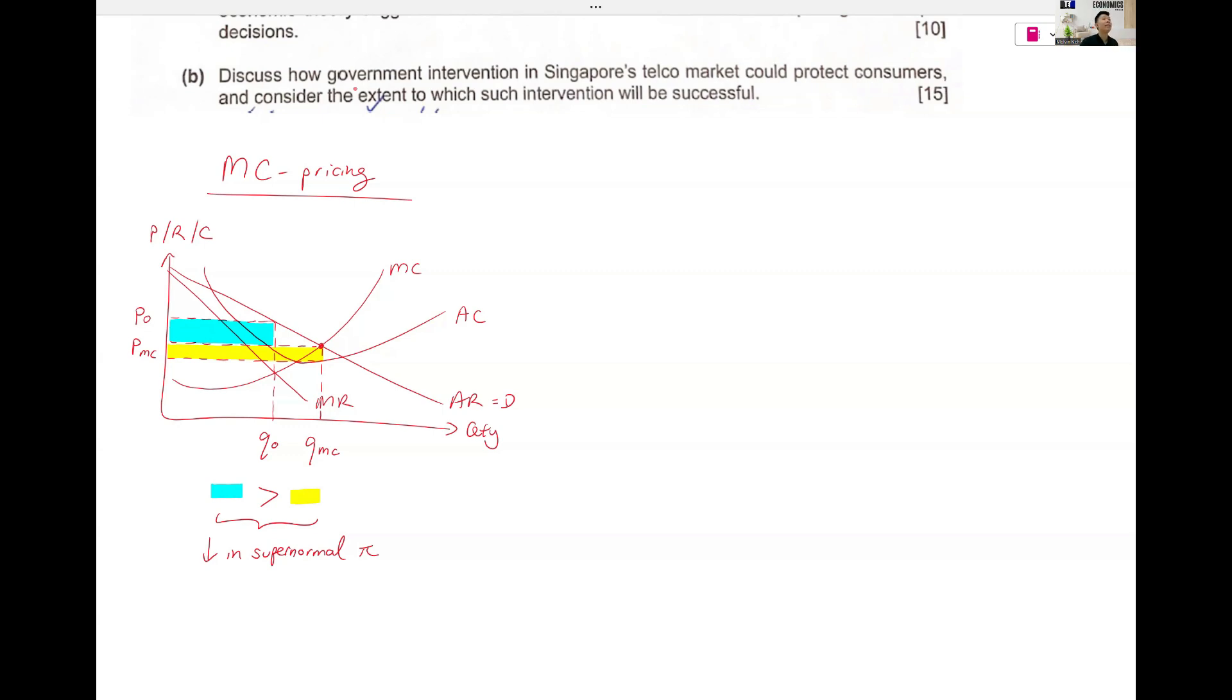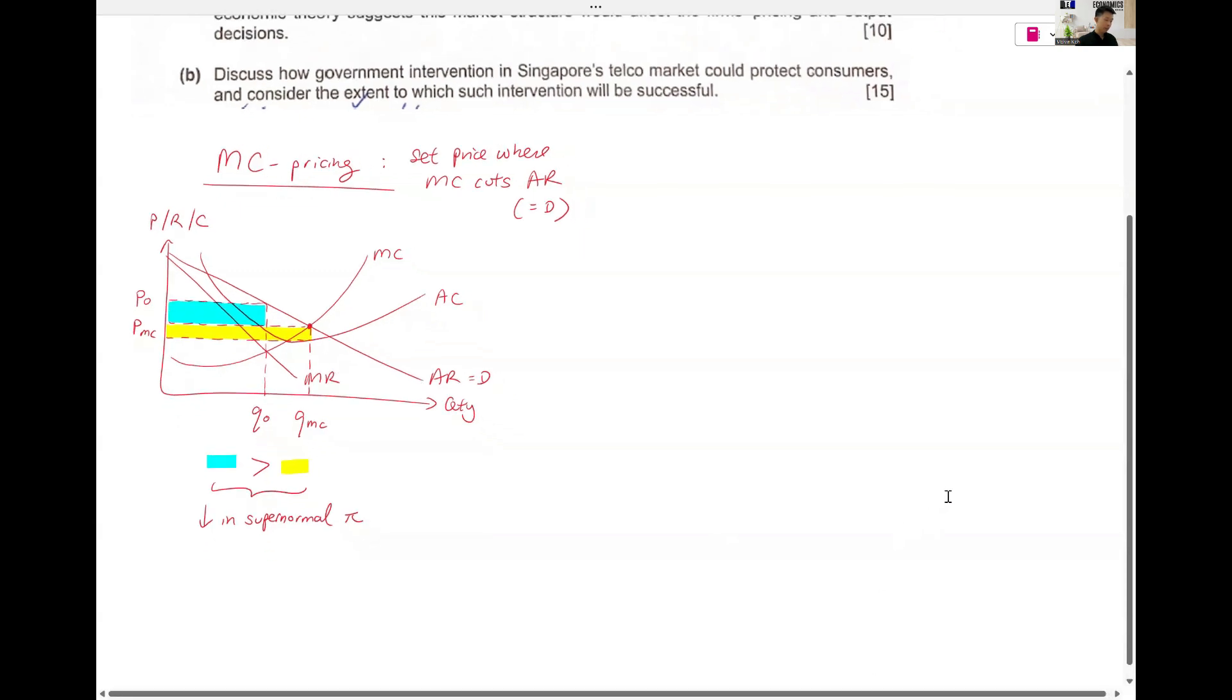So MC pricing, it's a little bit like a price ceiling or price floor. You force them to set price where MC cuts AR. You compel the firms to do this. They have to follow. Why is it the point where it cuts AR? AR is your demand curve. Price is always read off your demand curve.